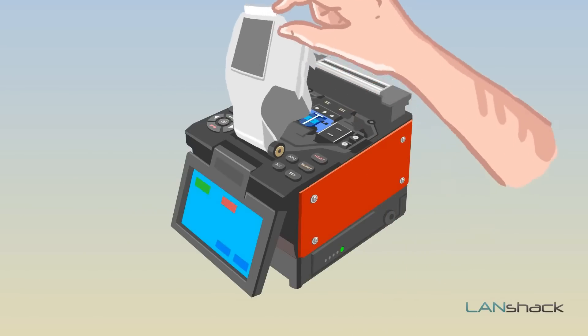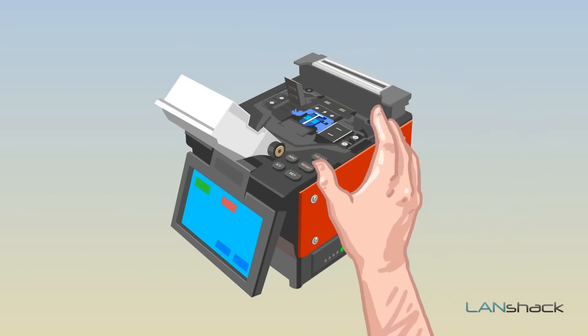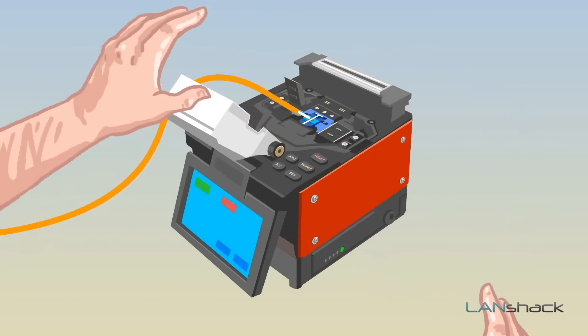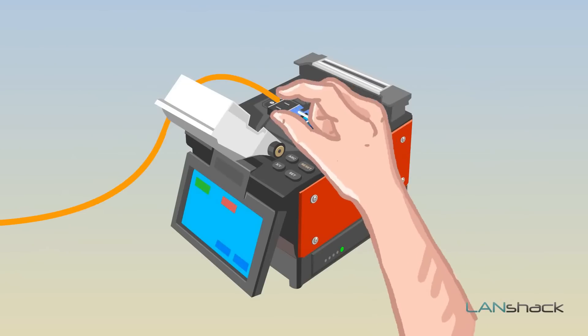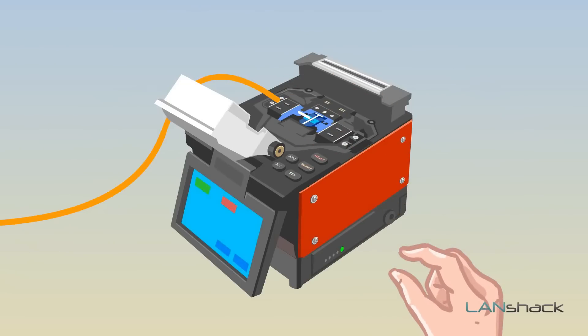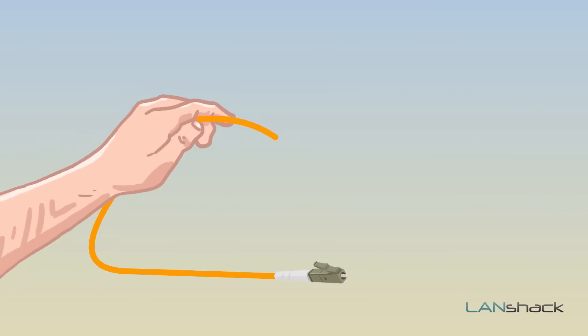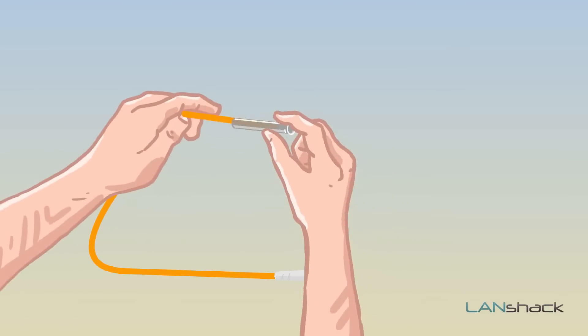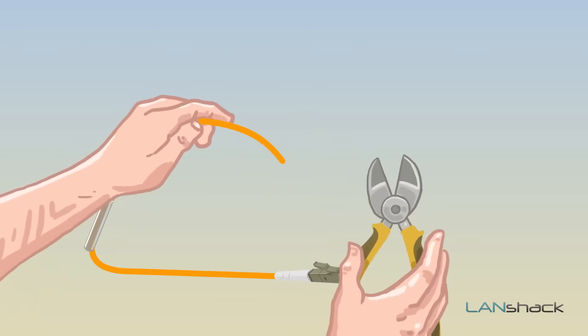Next, raise the splicer hood and release both fiber clamps. Lower the striped fiber into the V grooves and then close the holder cover. Then repeat the process with the other fiber strand. But do not forget to slide on the protective sleeve first.